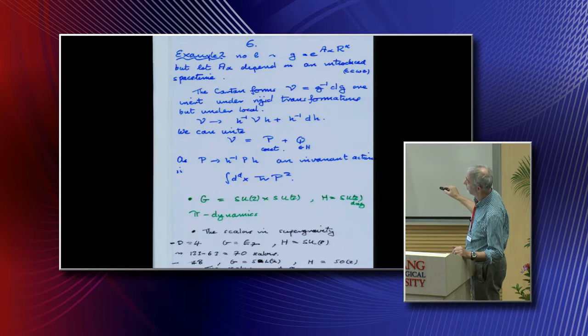Similarly, the scalars in supergravity in four dimensions, we had this group E7, and then we have this SU8, so you get 70 scalars. The actions in these cases are just like this.